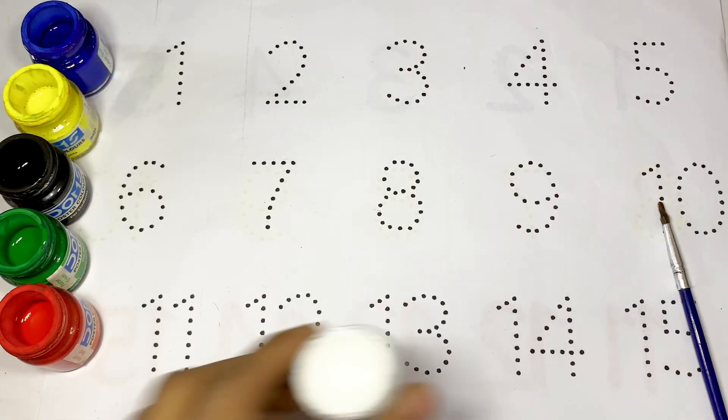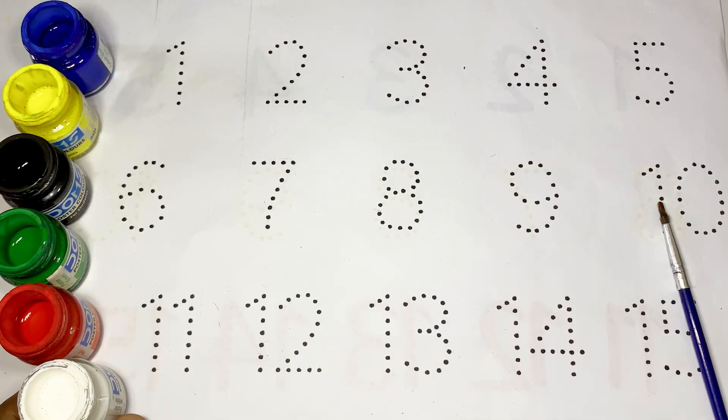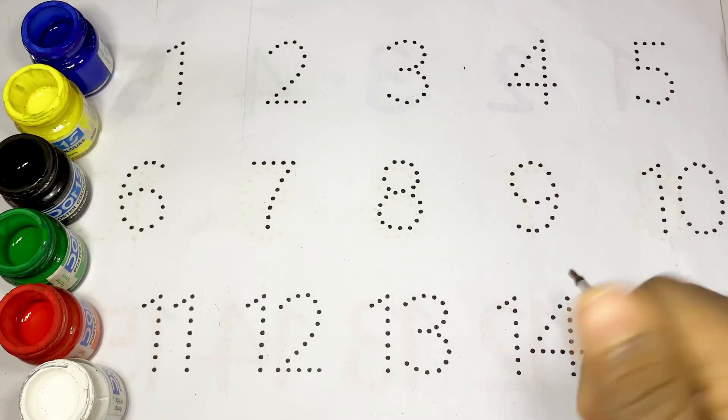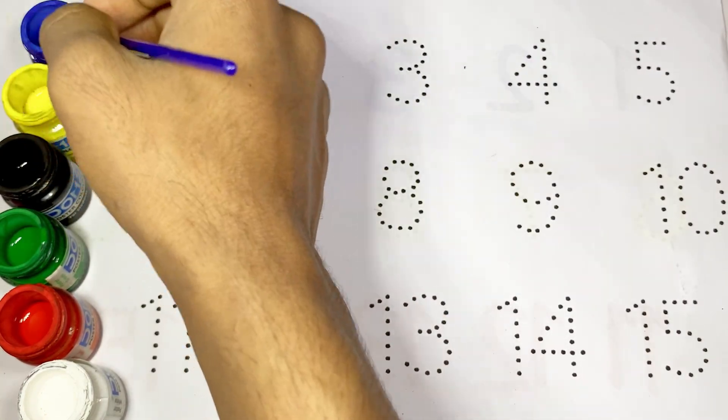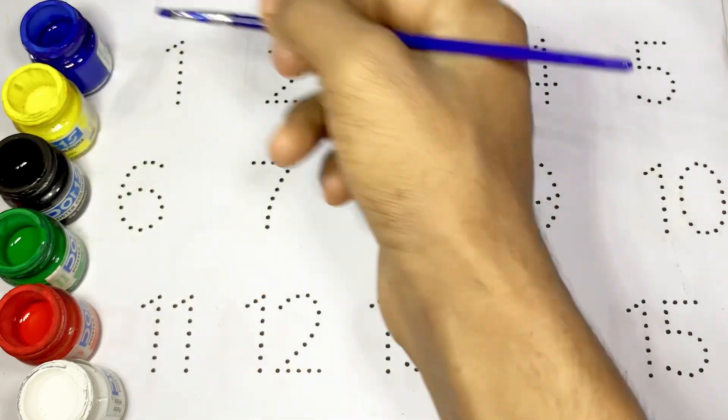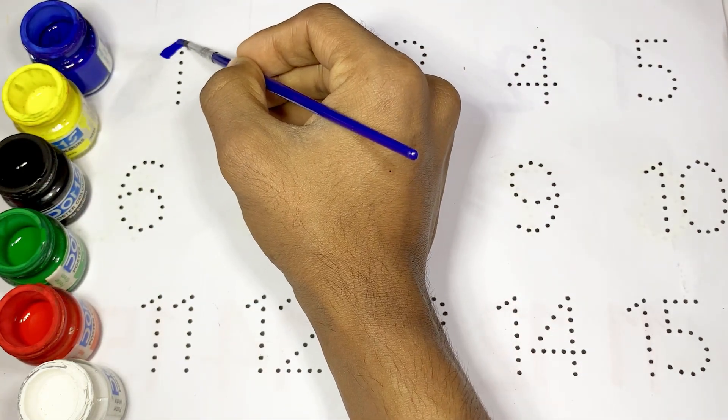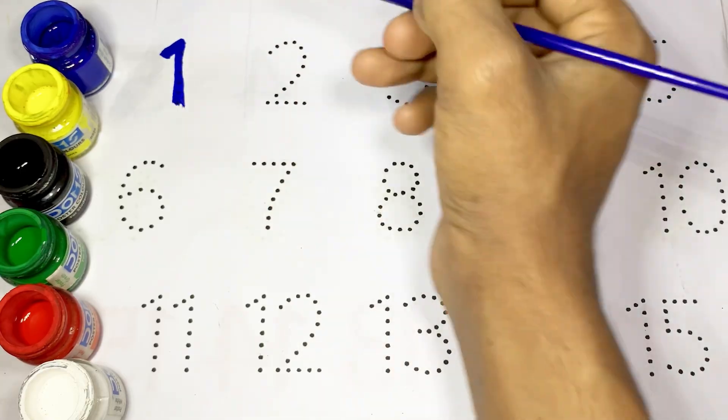Kids, let's draw the numbers. First you draw one and use blue color. This is one.